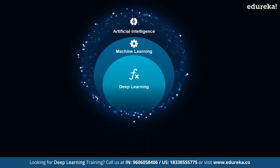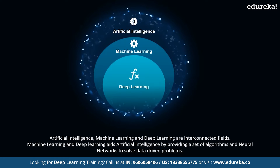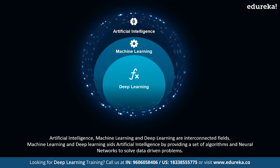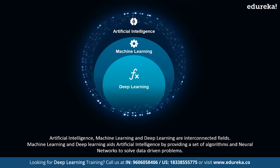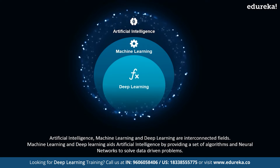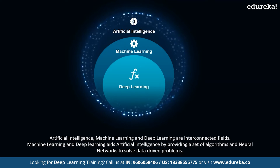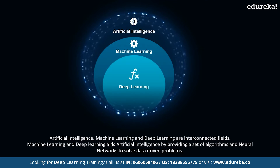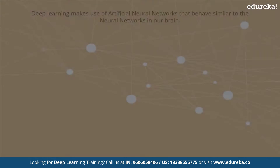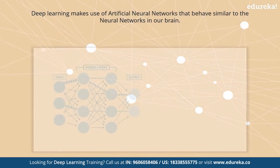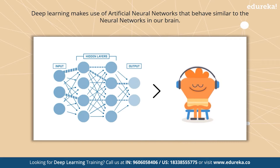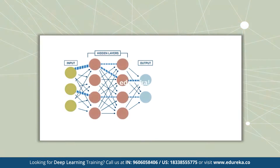Artificial intelligence, machine learning, and deep learning are interconnected fields where machine learning and deep learning aids artificial intelligence by providing a set of algorithms and neural networks to solve data-driven problems. Deep learning makes use of artificial neural networks that behave similar to the neural networks in our brain.